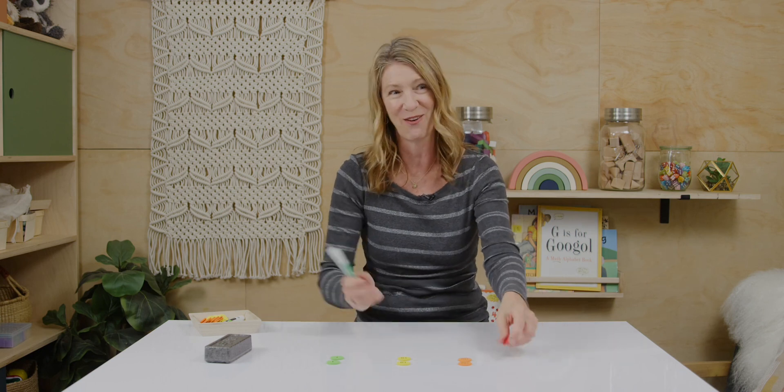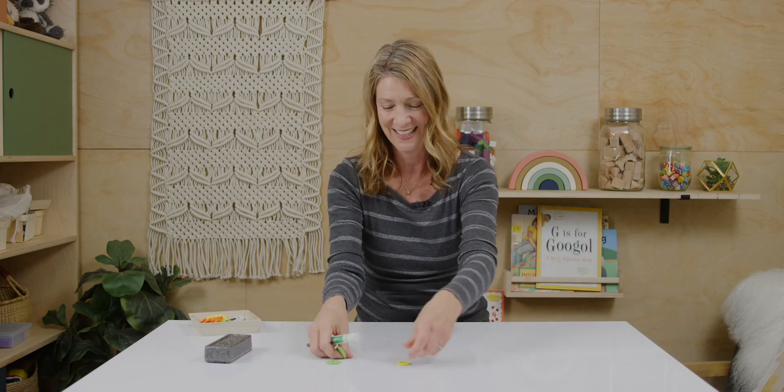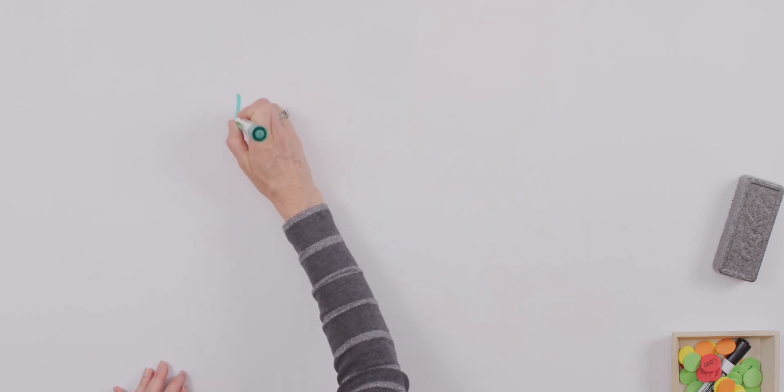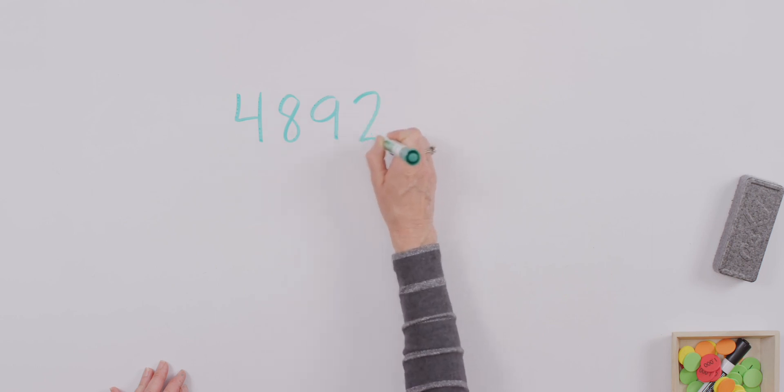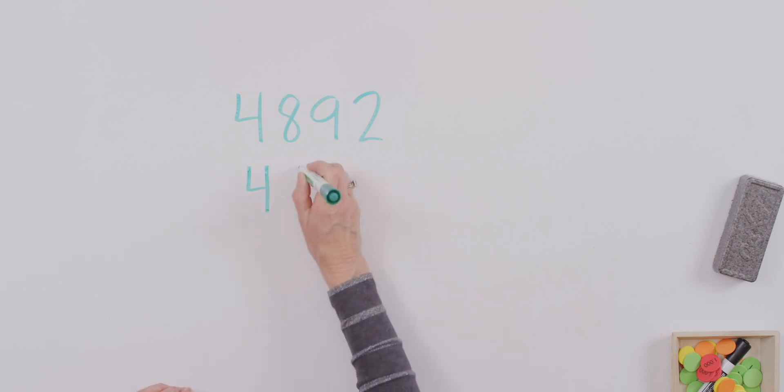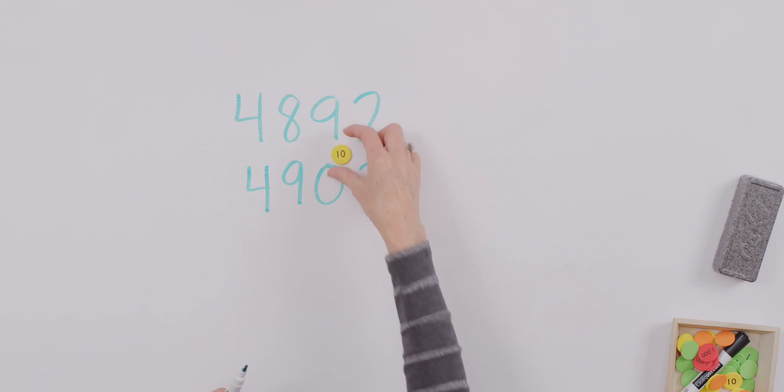Did you see that thousand go flying off my desk? If I have the number 4,892 and I change that number to 4,902, what did I do to the number? 4,902. Did you say that I added a 10? That's correct. So, my rule in this case was to add 10.